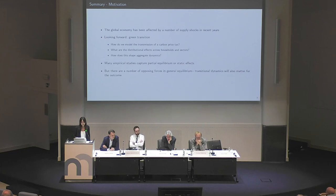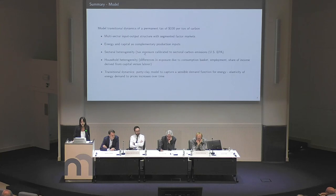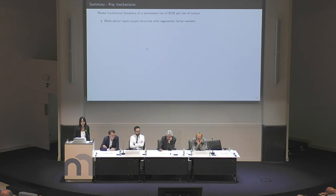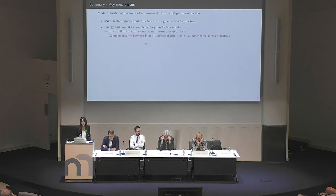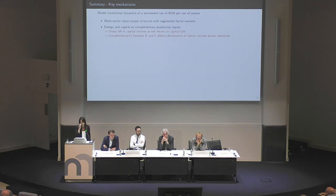The transitional dynamics will also matter for the outcome. I'm going to skip the model and just go through the mechanisms it tries to capture, since Christian already did a very good job explaining it. It tries to model the transitional dynamics of a permanent tax of $100 per ton of carbon, using a multi-sector input-output structure with segmented factor markets. A key feature is that energy and capital are complementary inputs in production, resulting in a sharp fall in capital income as the net return on capital falls.